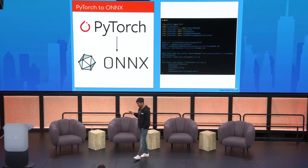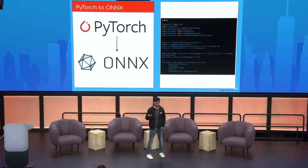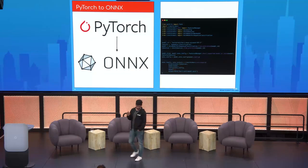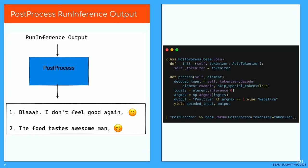Converting to ONNX is quite easy and available on Hugging Face — just a few lines of code and you have the ONNX model. Once you have the ONNX model, you convert it to TensorRT. When you download the TensorRT SDK it also comes with a command line tool. You provide the path to the ONNX model, specify where you want to save the TensorRT engine, add a little more configuration, and you'll have your TensorRT engine ready.